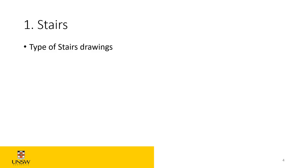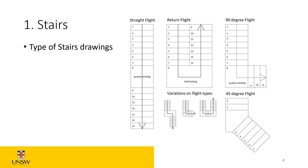There are a few types of stairs. We talked about the straight flight — sometimes if you have a certain number of rises over 18 you need to introduce a landing. A straight flight is one straight run, sometimes with a landing, sometimes without. Then you have your return flight where it returns, with a landing or a 90-degree flight. Sometimes you have a 45-degree flight, so there are various styles of stairs.